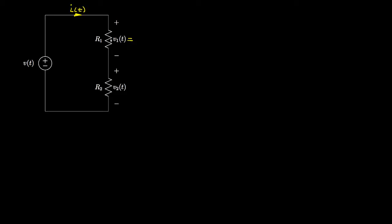The voltage across the first resistor would be R1 times the current, and the voltage across the second resistor is R2 times the current. Now let's see if we can figure out what the current would be. We'll begin at a point in the circuit and apply Kirchhoff's voltage law as we move around this simple loop.